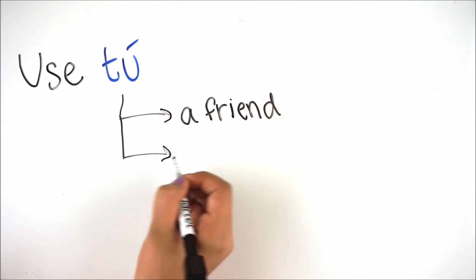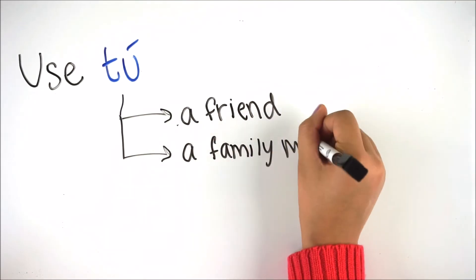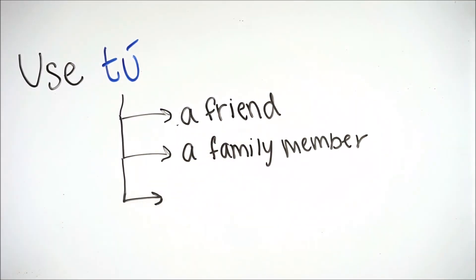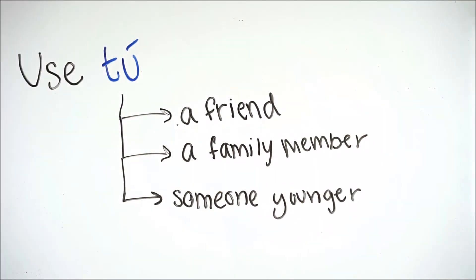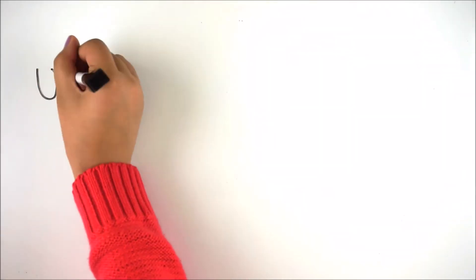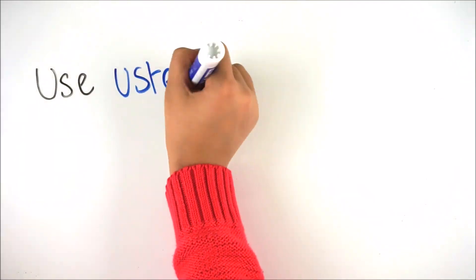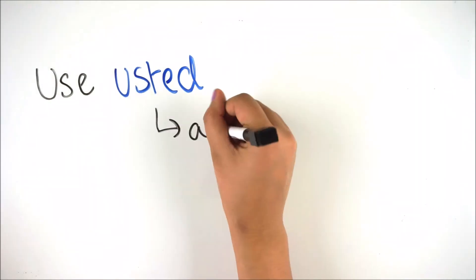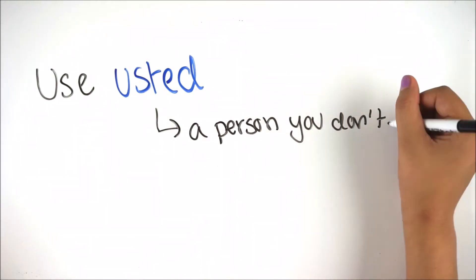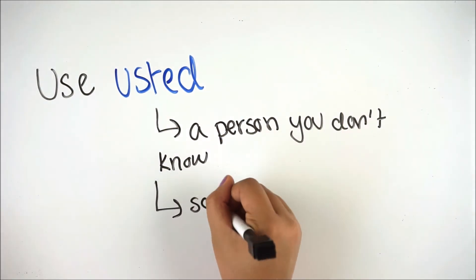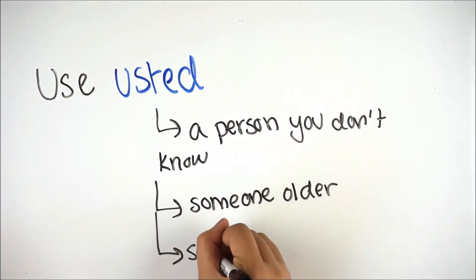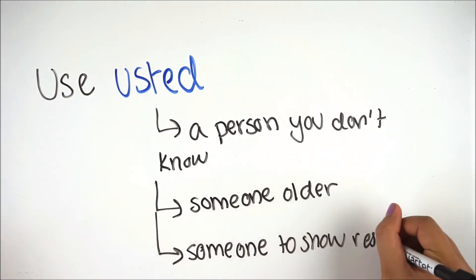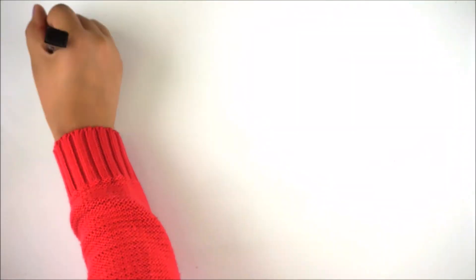You use tú when you want to describe a friend, a family member, or someone younger. You use usted when you want to describe a person you don't know, someone older, or someone you want to show respect to.